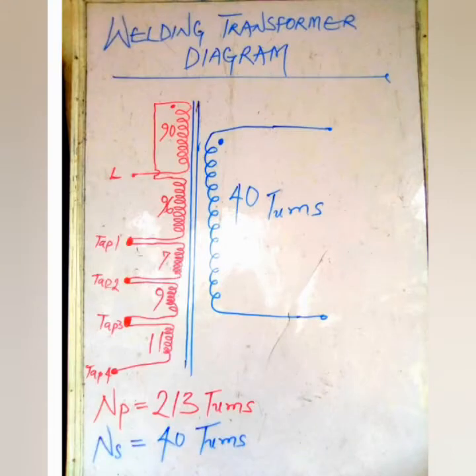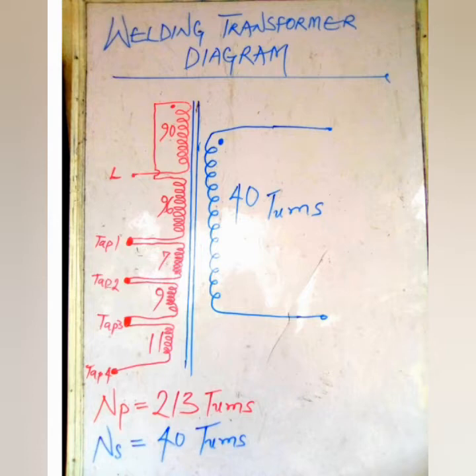Permeability is the ability of a material to allow the flow of magnetic flux. After removing our windings, this is the data obtained: from the start of the primary windings to tap 1 is 90 plus 96 turns; from tap 1 to tap 2 is 7 turns; from tap 2 to tap 3 is 9 turns; from tap 3 to tap 4 is 11 turns. The total from start to tap 4 is 213 turns — the maximum input voltage rating. The secondary winding has 40 turns.